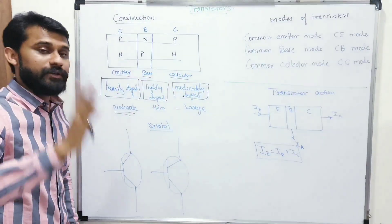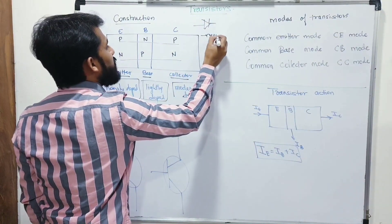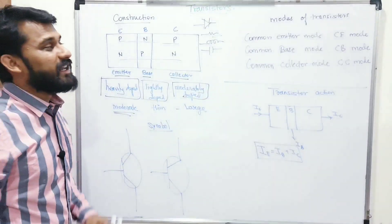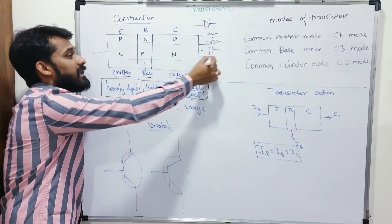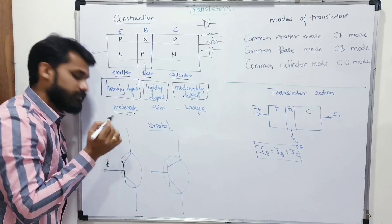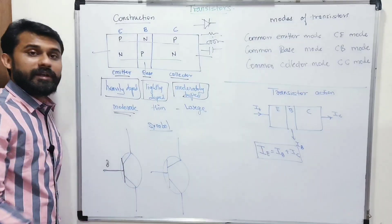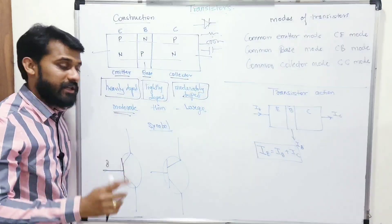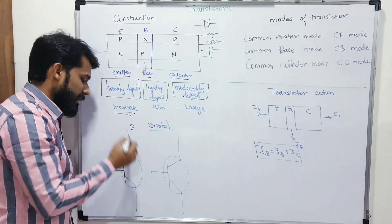Just as we know the symbols for a diode, resistor, inductor, and capacitor, similarly a transistor has a symbol — though it is a bit complicated. The transistor symbol has three terminals: emitter, base, and collector. There is a base line, and from it we have the emitter and collector. You can put emitter anywhere — it doesn't matter which side.